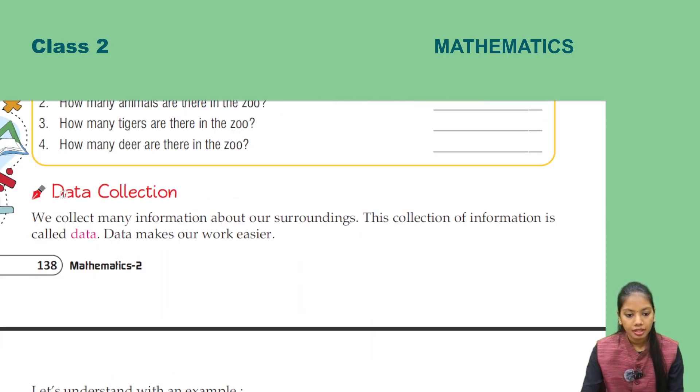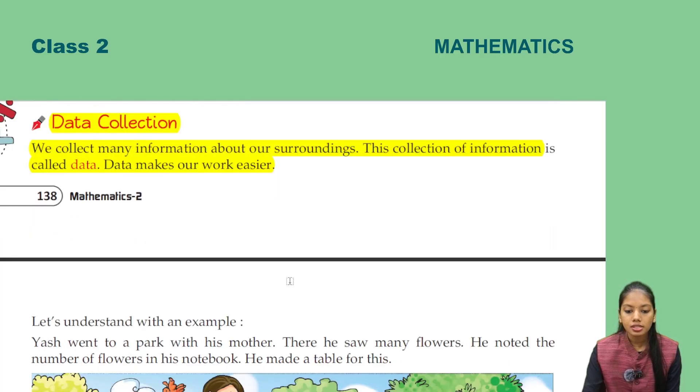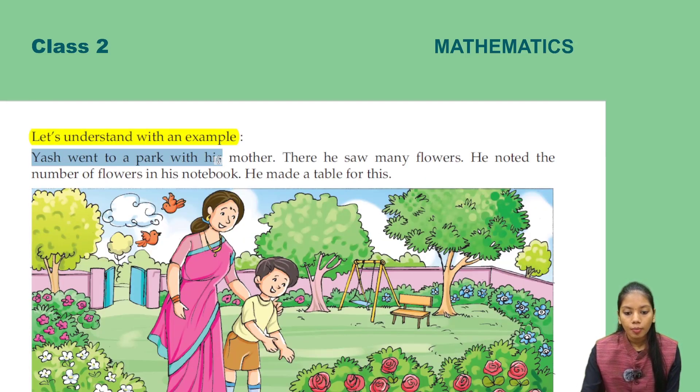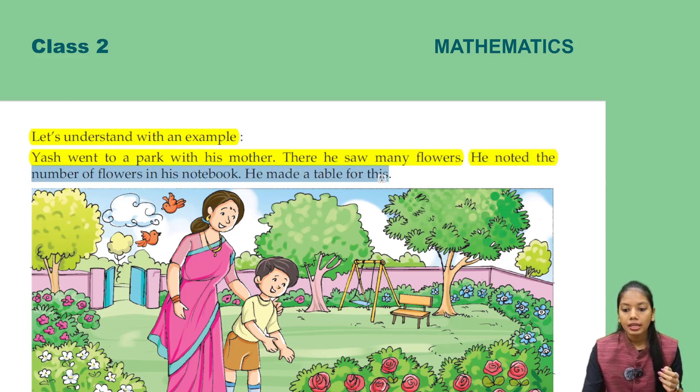Data Collection. We collect many information from our surroundings. This collection of information is called data. Data makes our work easier. It made a table for us.